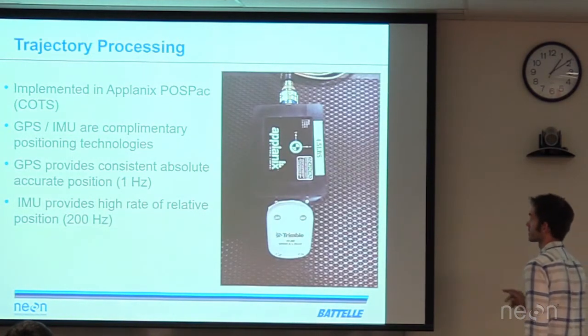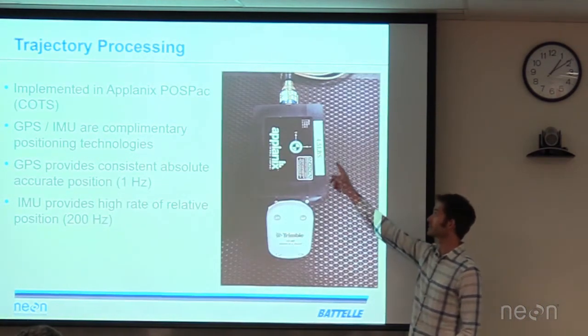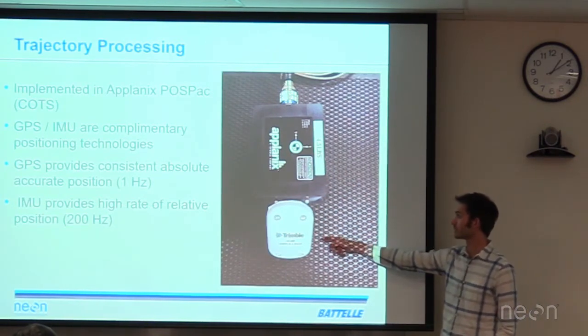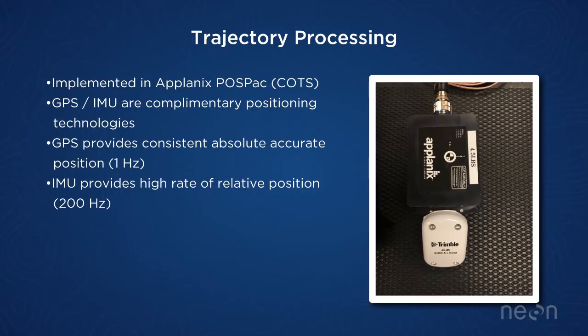The IMU is located inside the aircraft to get roll, pitch, and yaw, as well as the GPS antenna. One of the reasons we're able to get really accurate trajectories is that GPS and IMU are complementary technologies. The IMU achieves really fast positioning but is prone to drift over time, whereas GPS gives good position every second but can't provide a position between those GPS observations.